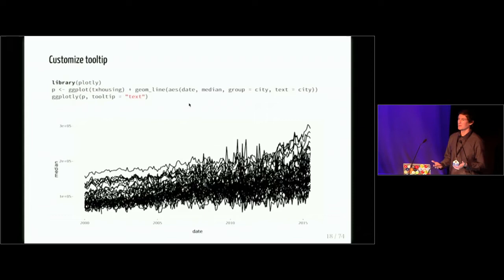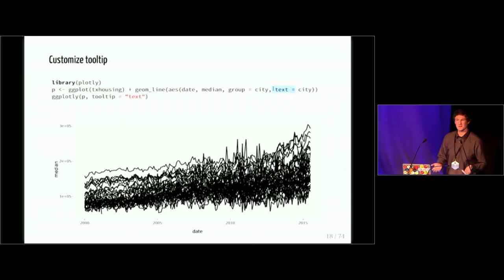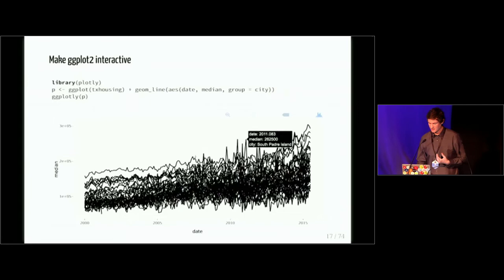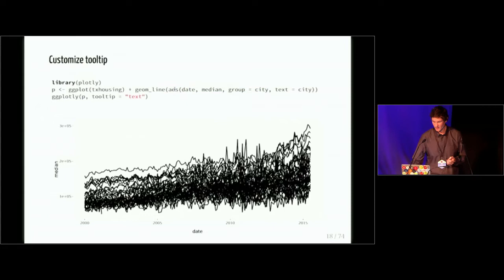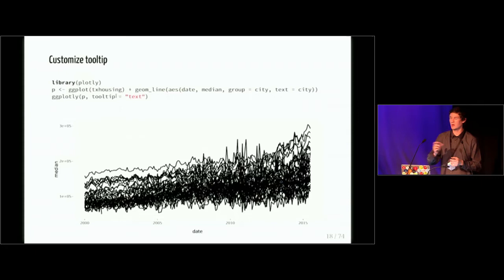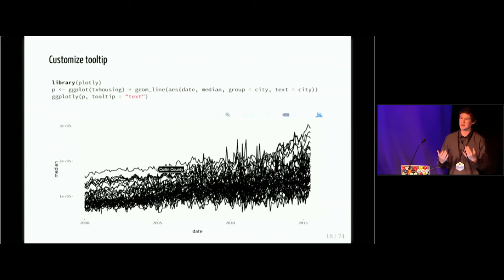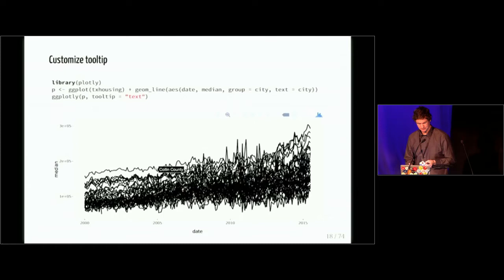A couple of people in the survey asked how to customize the tooltip. If you're using ggplotly, one thing you can do is take advantage of the text aesthetic — this isn't officially part of ggplot2 but it's something that ggplotly will pick up on and automatically include in the tooltip. By default ggplotly will put all of the aesthetic mappings in the tooltip. You can use the tooltip argument to say 'just show this collection of aesthetics' — supply a custom string to the text aesthetic and say tooltip equals text.